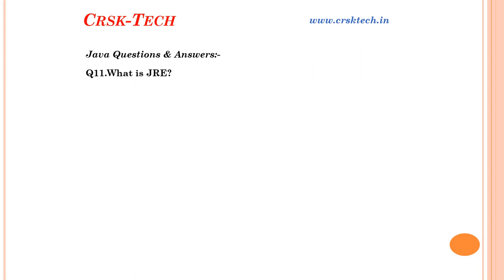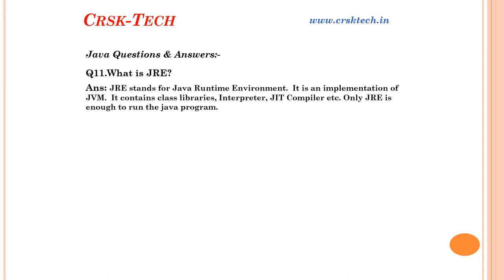Question number eleven: What is JRE? JRE stands for Java Runtime Environment. It is an implementation of JVM. JRE contains class libraries, interpreter, JIT compiler, etc. Only JRE is enough to run Java programs — without JRE, we cannot run our Java program, because JRE provides the complete environment to run our Java application. For example, in a program we have classes, objects, class-level variables, and method-level variables — all of which require memory space. JRE provides that memory space and the complete environment to run our Java application.